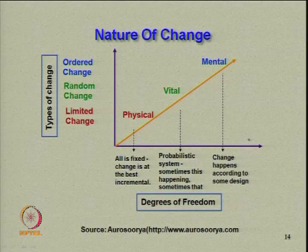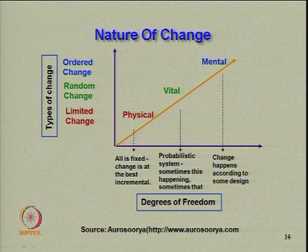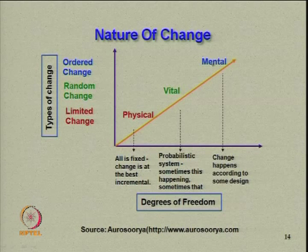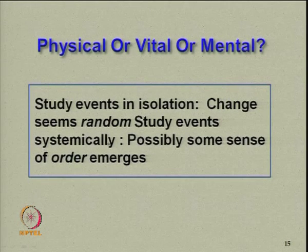Put together in a matrix format, this helps you explain degrees of freedom, which is lowest in physical change, mixed in vital change, and highest in mental change. Put simply, when you are looking for material change, your choices are very limited. When you are looking for change in frameworks of reference, there is a huge possibility of change. Study events in isolation and change seems random; study events systemically and some sense of order emerges.